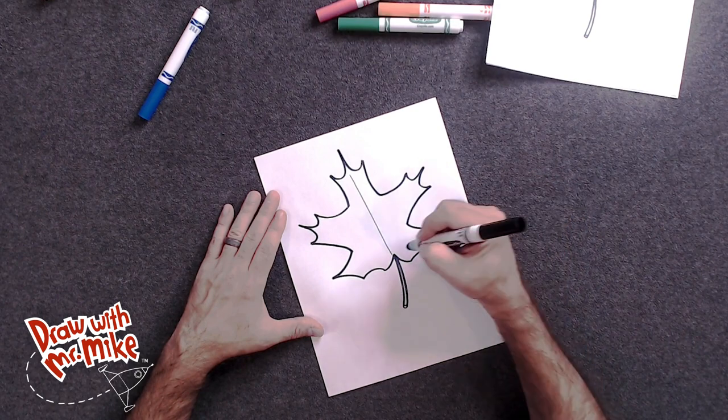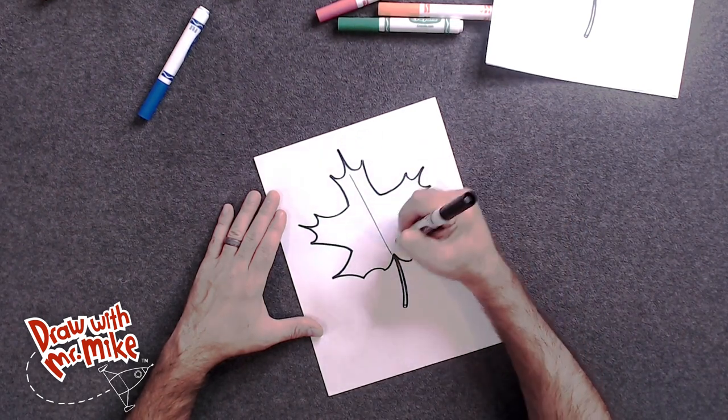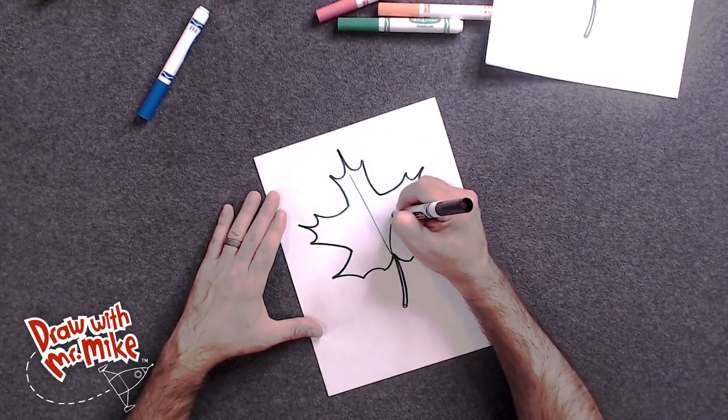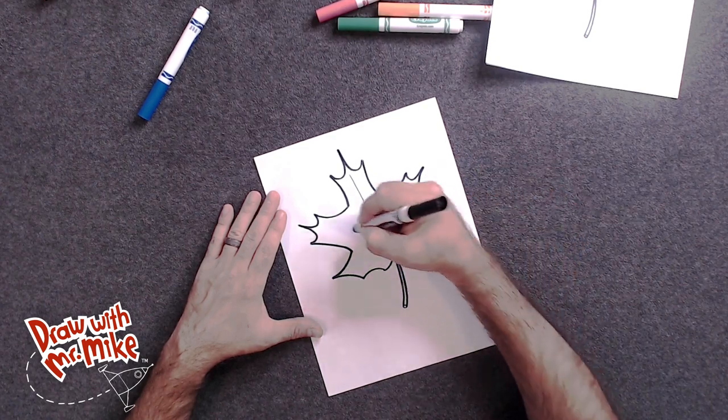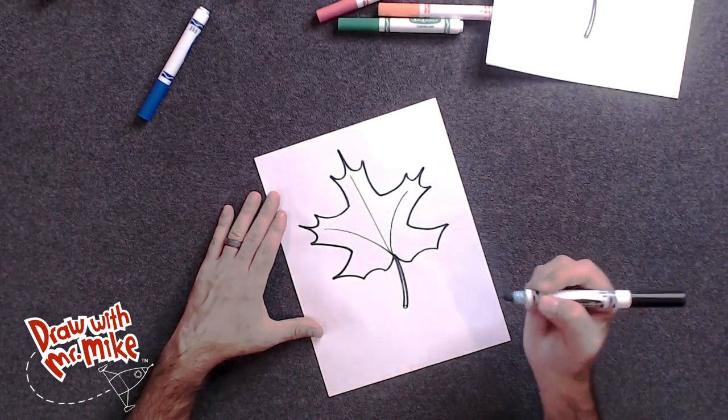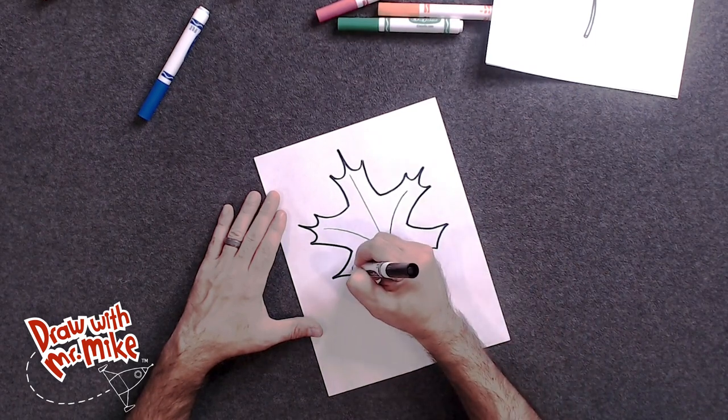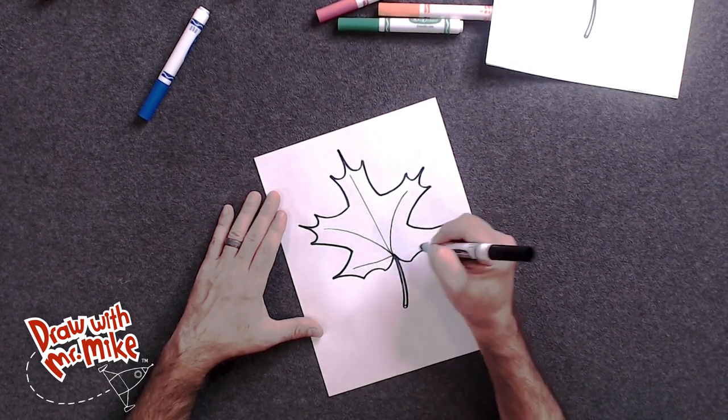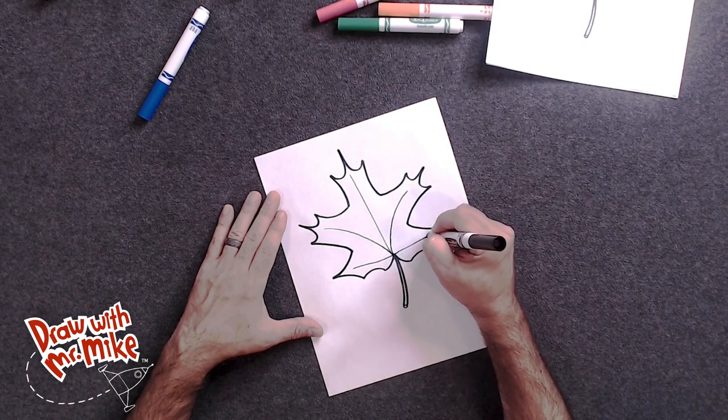And then we're going to do an arc. That goes out from the stem. All the way out like this. And then the same thing here. All the way in to that point. And then we'll do a line to that point. And then another line over here.